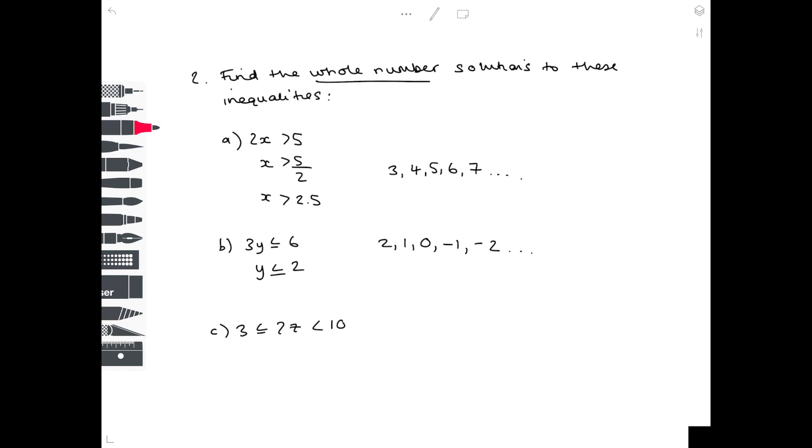Part c, 3 is less than or equal to 2z, and 2z is less than 10. So to get z by itself, we need to divide both sides by 2 to get 1.5 is less than or equal to z, which is less than 10. So z must be numbers which are bigger or equal to 1.5, and they need to be whole numbers, which is why 2 counts, 3 counts, 4, 5, 6, 7, 8, 9. And we have to stop there because it says from our rule that z has to be less than 10.